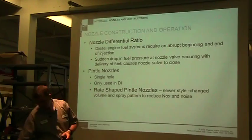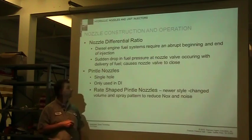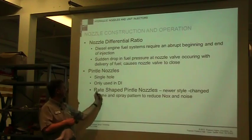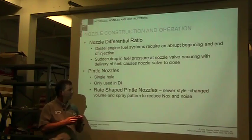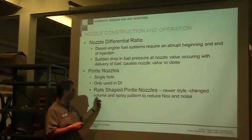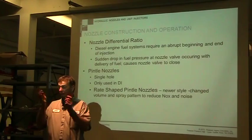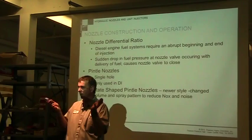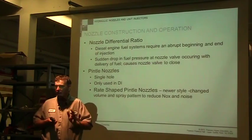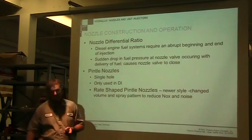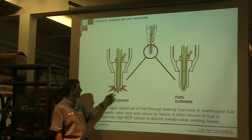Pintle nozzles are used for indirect injection — that's the one with the piece sticking out the end. Pintle injectors have a single hole. Rate-shaped pintle nozzles are a newer style with a different spring design that controls the volume and spray pattern. As the tip opens up, it initially slows down and lets a small amount of fuel through — like a pilot injection — getting the fire burning, and then the main injection follows. We'll see this concept more with double spraying and similar topics later.